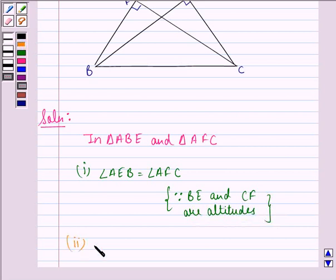Second, we see that angle A is equal to angle A. That is the common angle in two triangles.